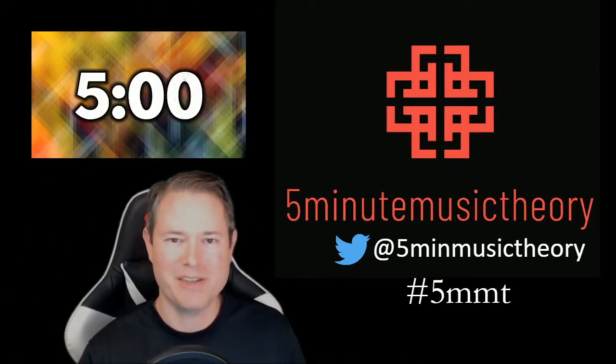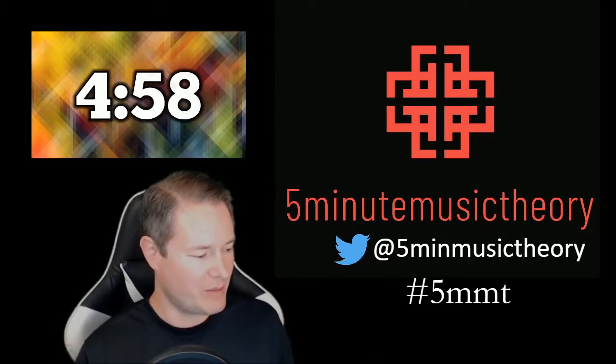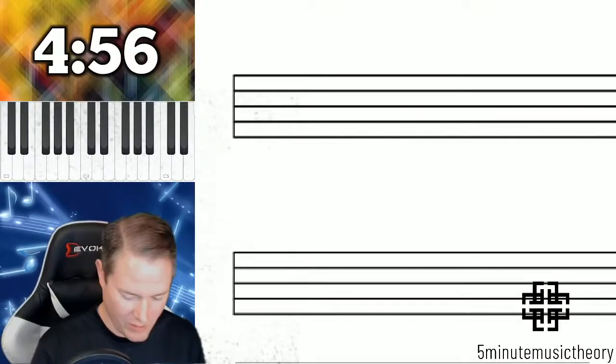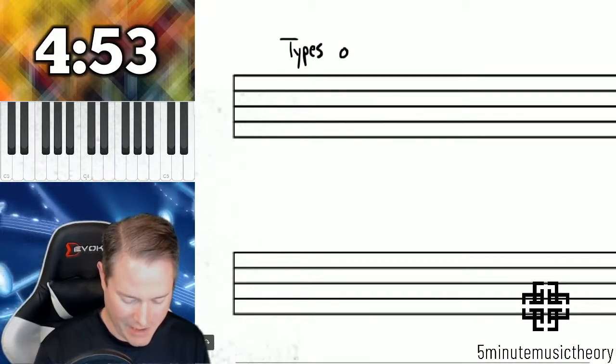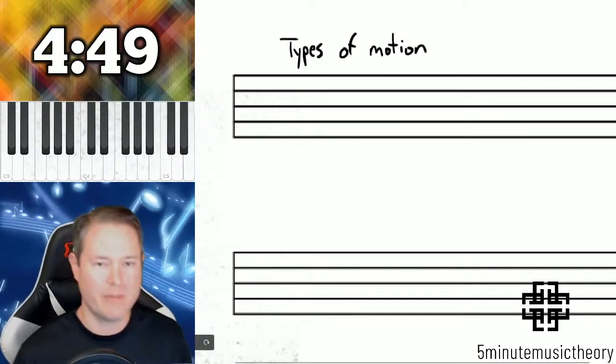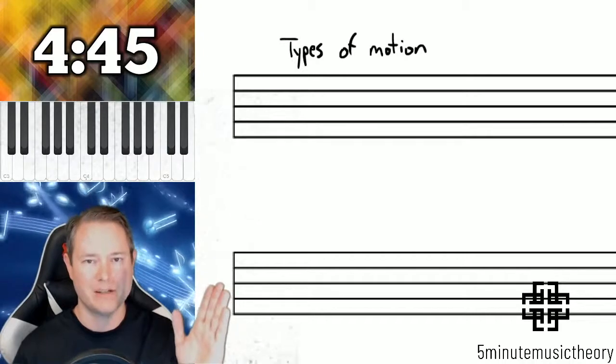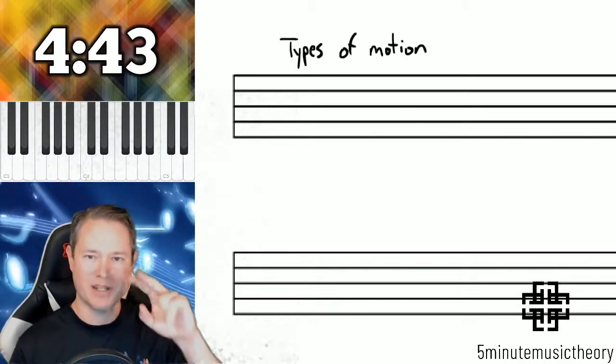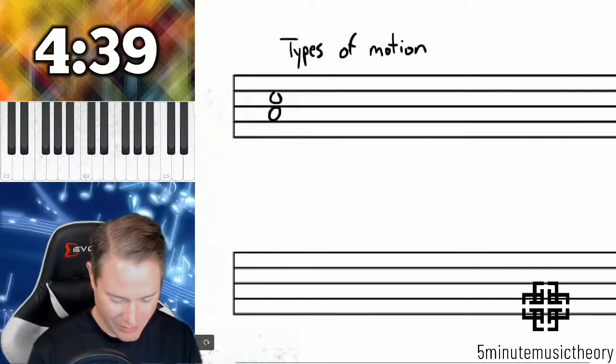Hello, I'm James Harvey, the professor of music theory at the College of Southern Nevada with 5-Minute Music Theory. We'll start the timer and we're going to cover a pretty large topic in this video, and it's the types of harmonic motion. When we're talking about harmonic motion, we're talking about how voices move from one chord to the next chord, and we're going to use two voices to show examples here.